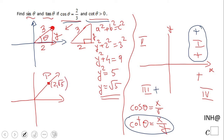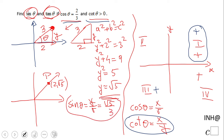Now we can find sine and tangent. Sine of theta, if you remember, is defined as y over r, so that is √5 over 3. And tangent of theta is defined as y over x, so in this case it's √5 over 2.